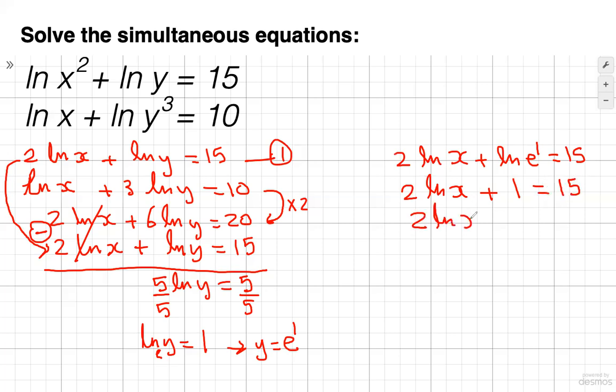So therefore, 2 ln x equals 14. Then divide both sides by 2, and that's going to give me ln x equals 7. Now remember, the base is e, so x would equal e to the 7.